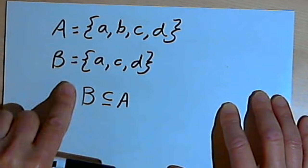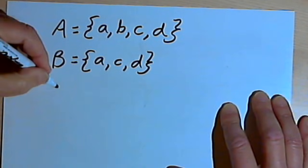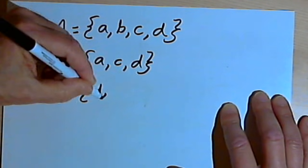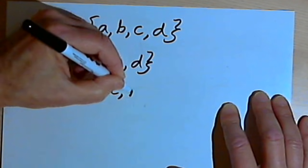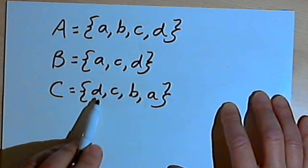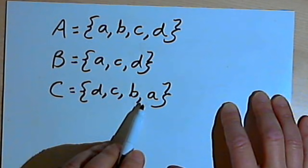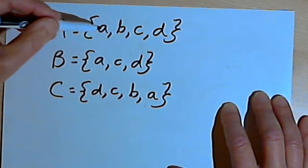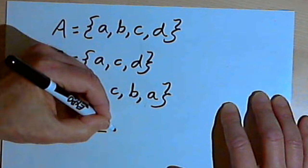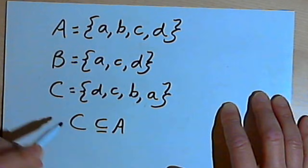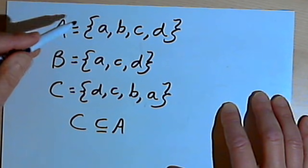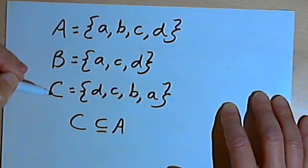Now let's say I add another set. Let's say I have set C, and set C contains the elements D, C, B and A. Well, all of the elements in set C are also found in set A, so I can say that set C is a subset of set A. Set C also has exactly the same elements as set A — in other words, sets A and C are equal to each other.